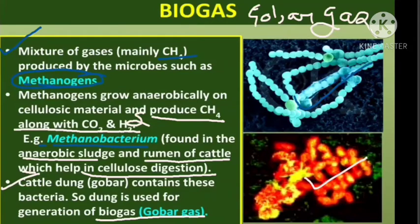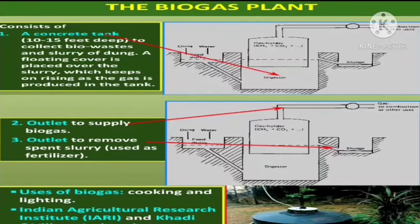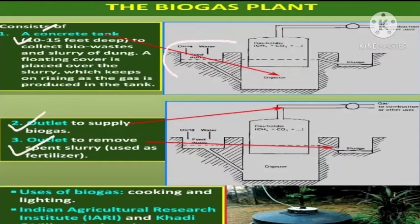Next we have the plant by which we can treat the biogas. This is the biogas plant, which actually treats the excreta of cattle on which the methanogen bacteria are present, and we use this bacteria to generate biogas — this gober gas. This biogas plant has a concrete tank with outlet A and outlet B. The biogas plant consists of a concrete tank in which bio-waste is collected.